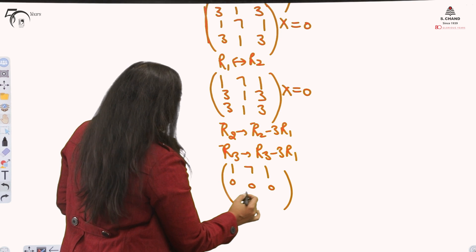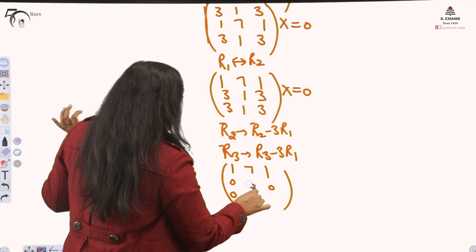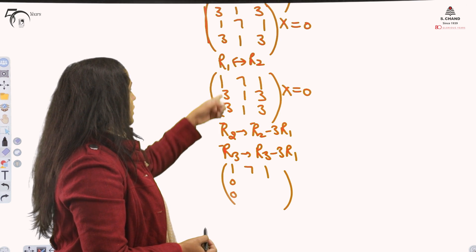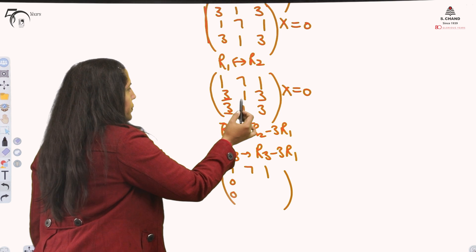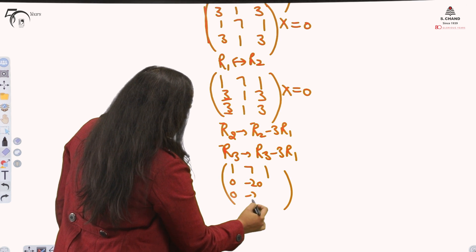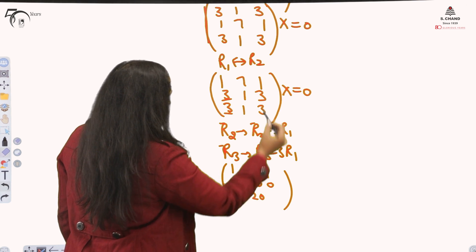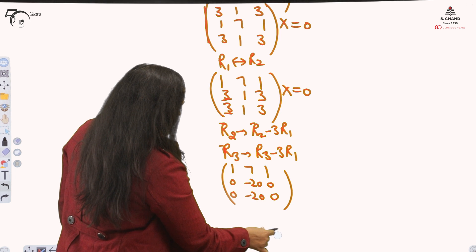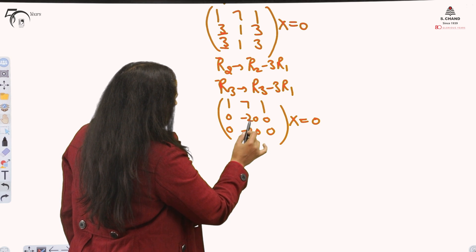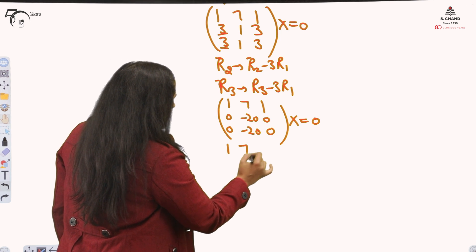My complete matrix will become 1, 7, 1, 0, 0, 0, 0 and this will not be 0. For the first 2 elements of this column we are making 0, this and this. Now 1 minus 21, so minus 20, 1 minus again the same, 3 minus 3 is 0, and 3 minus 3 is 0. This is my matrix.